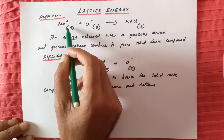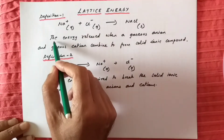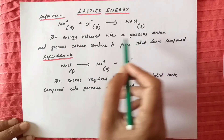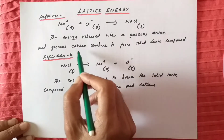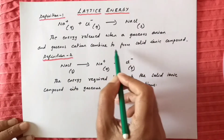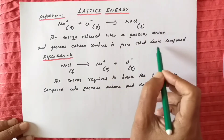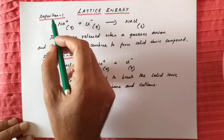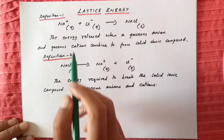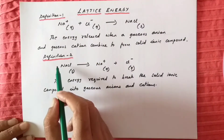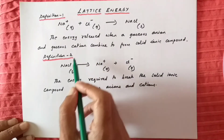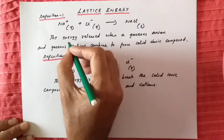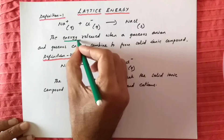The definition is: the energy released when a gaseous anion and gaseous cation combine to form a solid ionic compound. This is definition one. Most importantly, energy is released in this process.